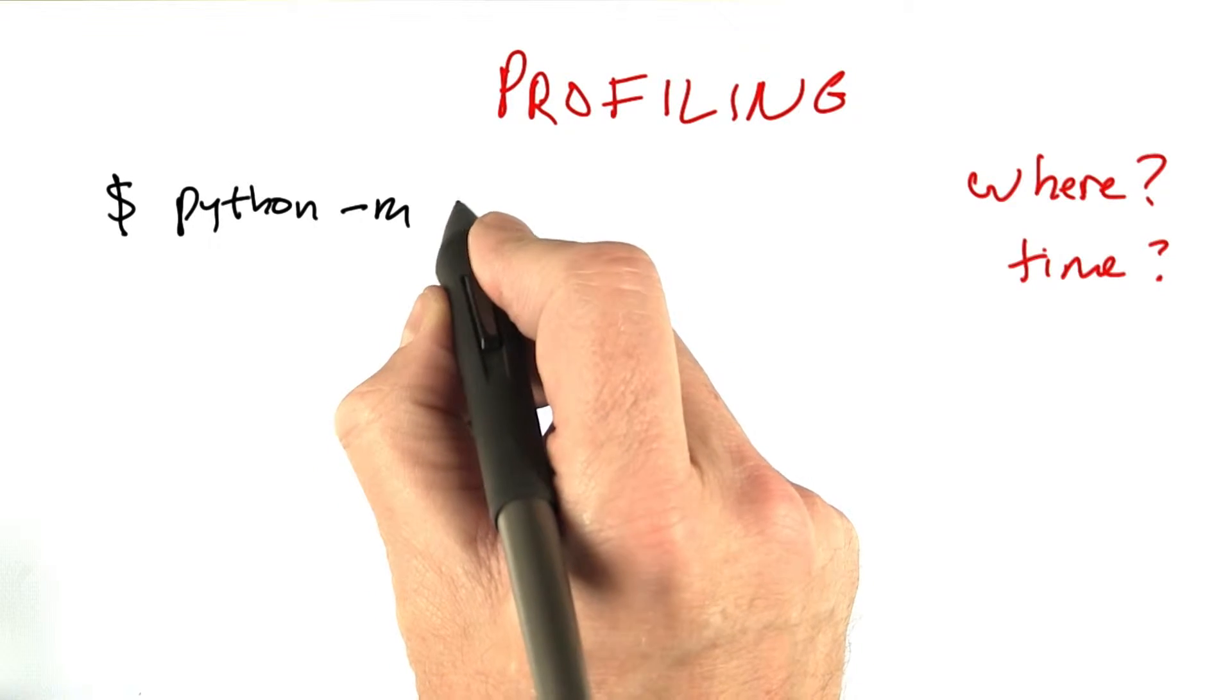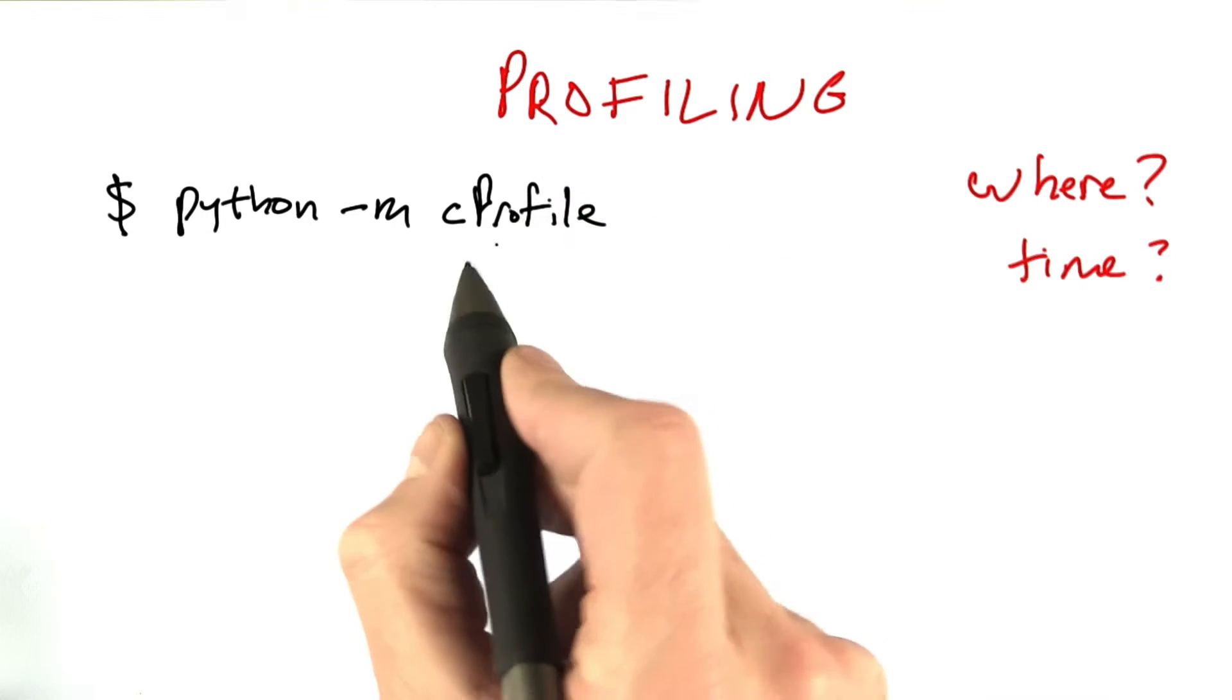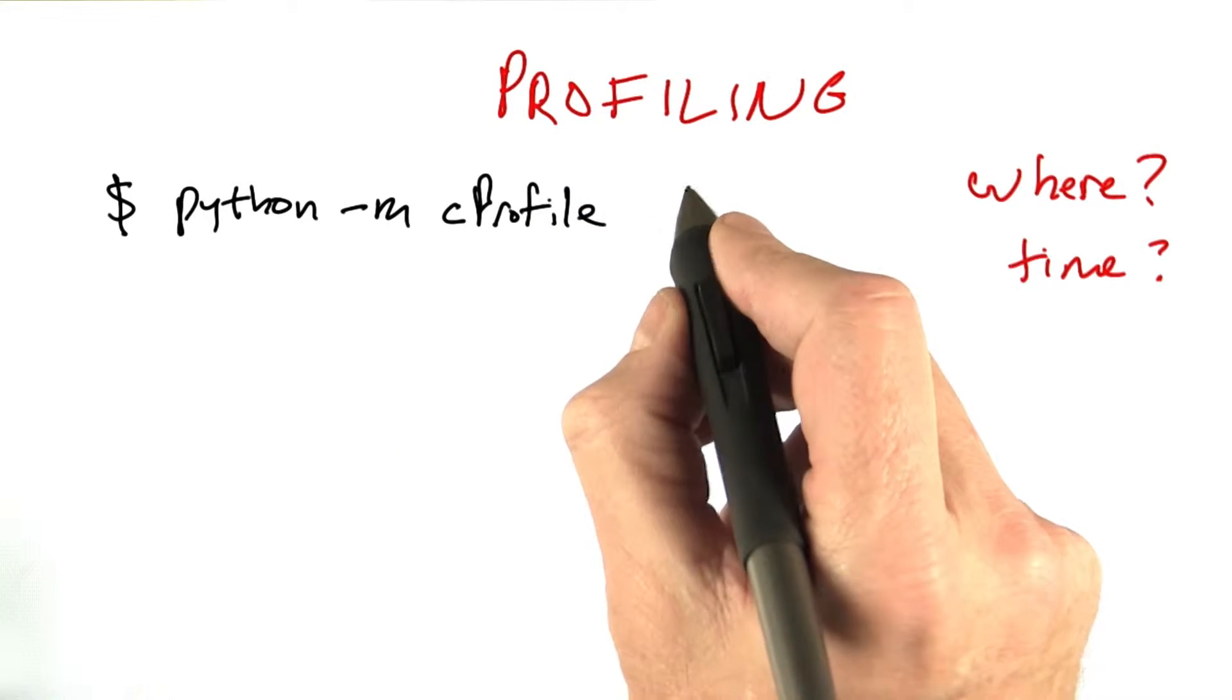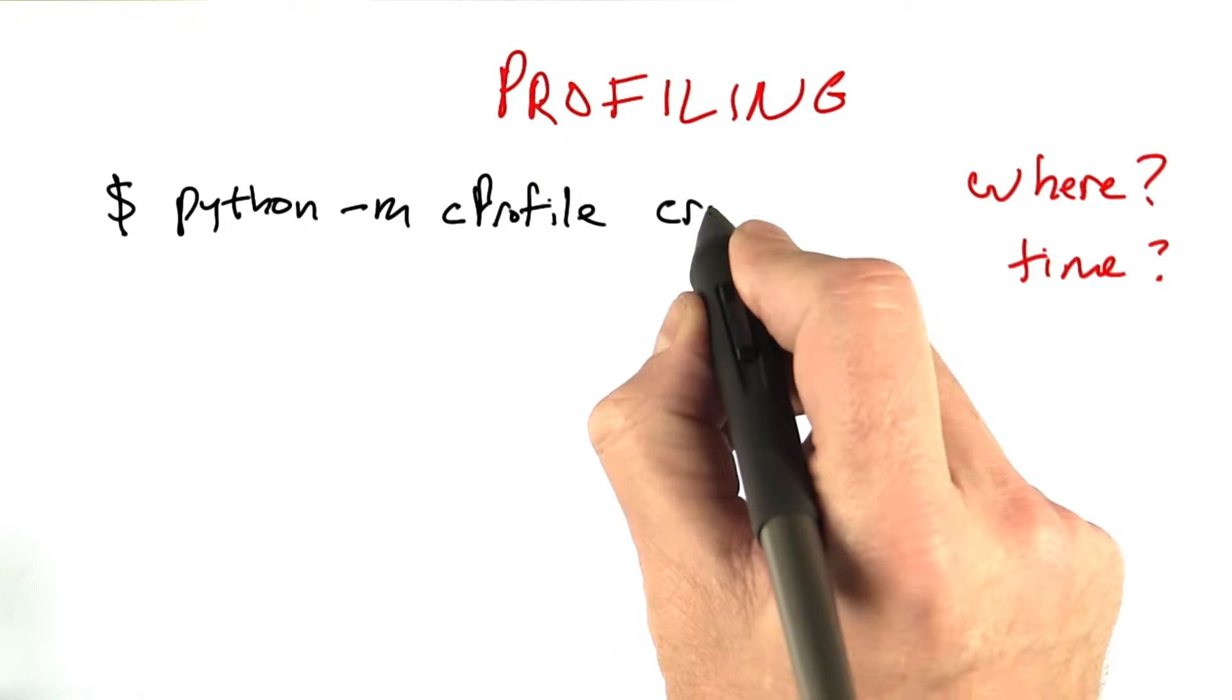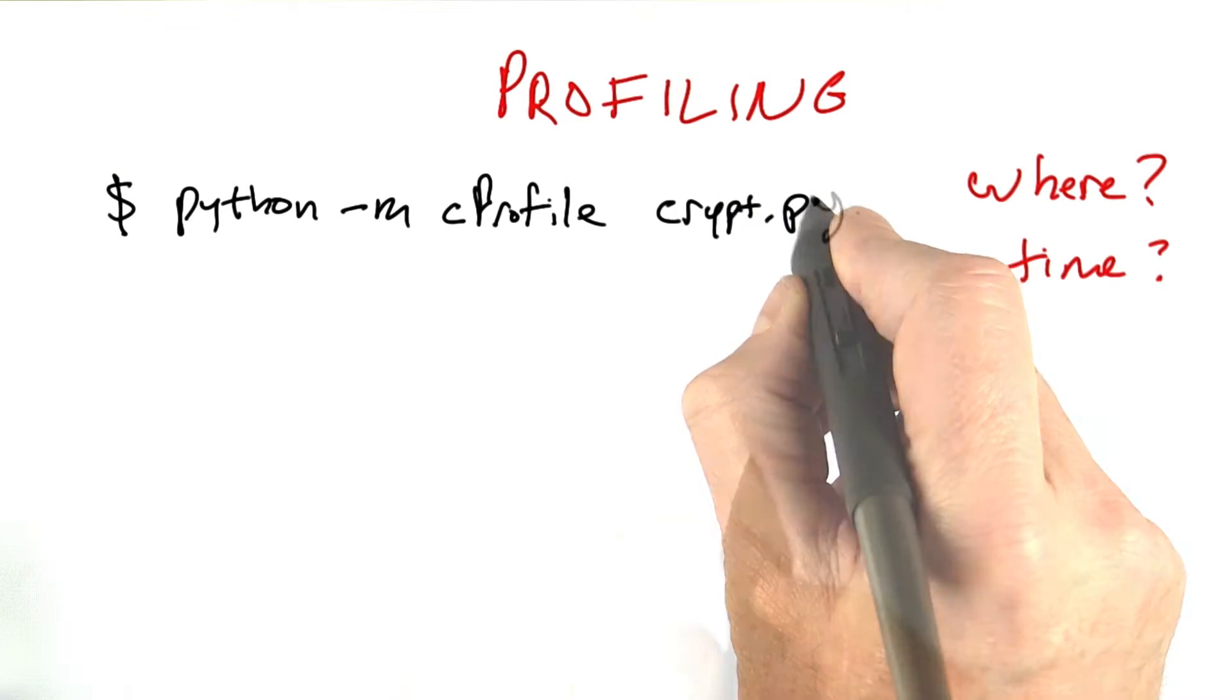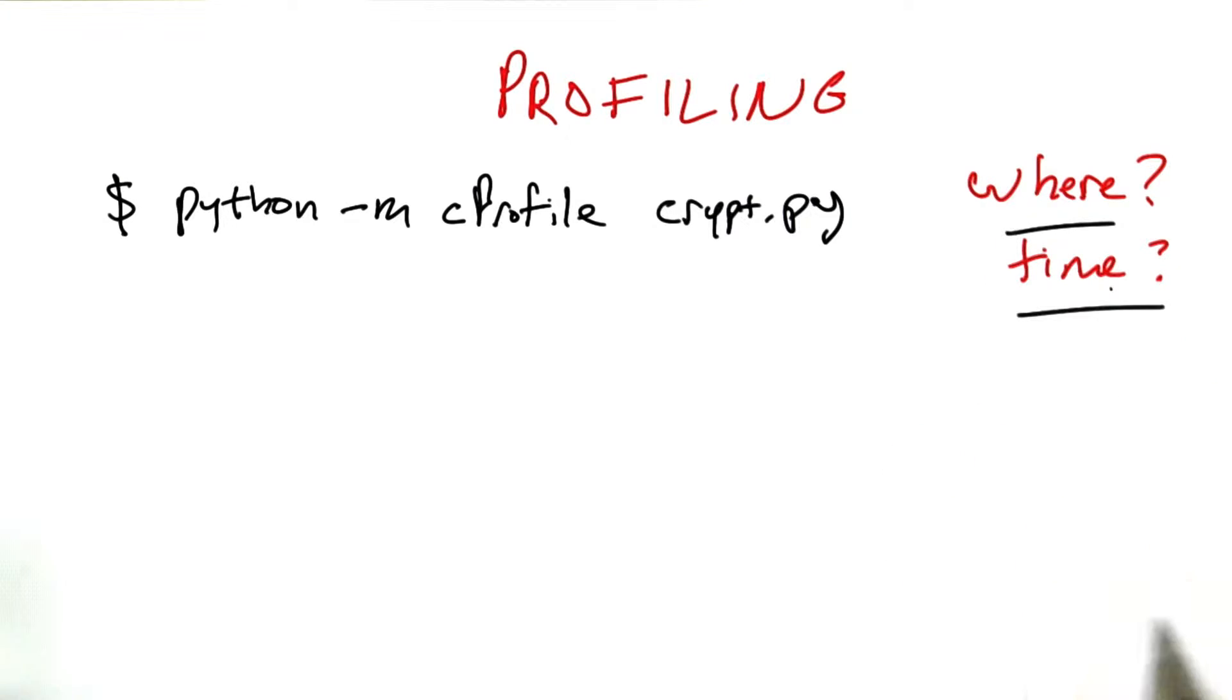which says module, and then load what's called the C profile module, lowercase C, uppercase P, and then the name of your file that you want to profile. I call my crypt arithmetic file crypt.py. Execute that, and you'll get a nice table of where all the time goes.